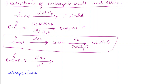An ester is prepared by treating a carboxylic acid with an alcohol in the presence of an acid catalyst — this process is called esterification. A water molecule is removed: the hydrogen comes from the carboxylic acid and the OH comes from the alcohol. The R' group then attaches to the oxygen of the carboxylate group, giving the product R-C(=O)-O-R'. This whole process is esterification.